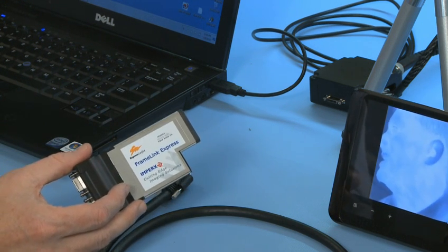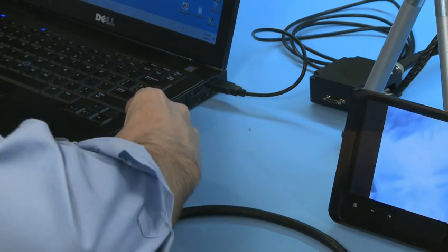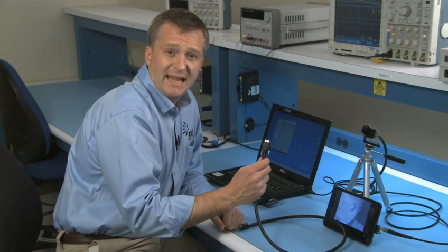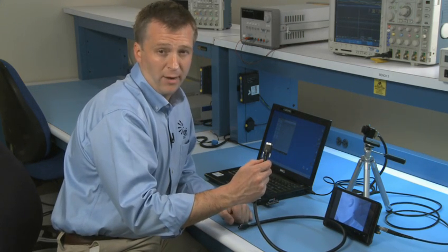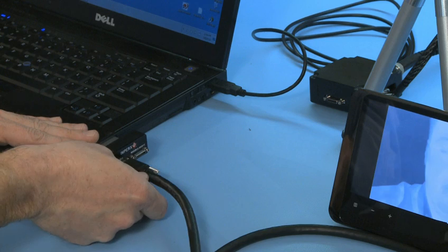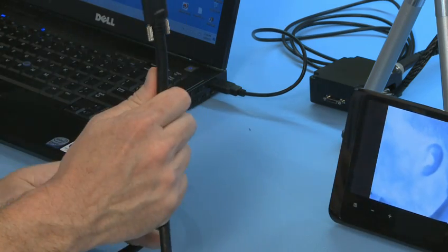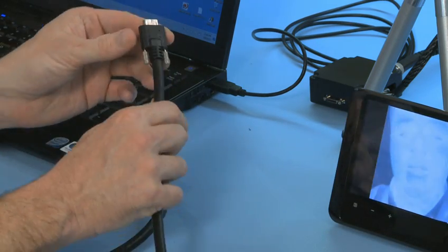Next, take the camera link cable and connect it to the frame grabber card. I'm using channel 1. Next, take the other side of the cable and connect it to the breakout box.